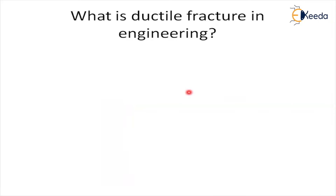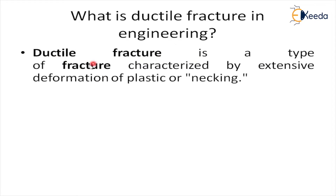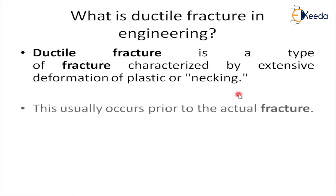How are we going to identify ductile fracture in engineering? The first point is: ductile fracture is a type of fracture characterized by extensive plastic deformation or necking. The important point is necking — before fracture is observed, necking will happen in the material first. That's why ductile fracture is a type of fracture where initially necking is observed, and after that fracture occurs — especially in steel or ductile materials.